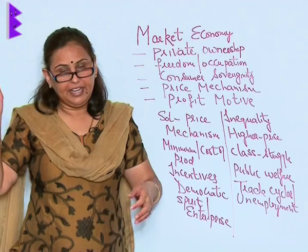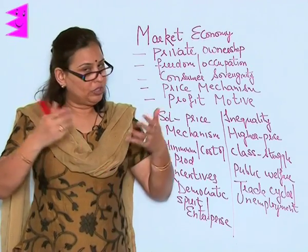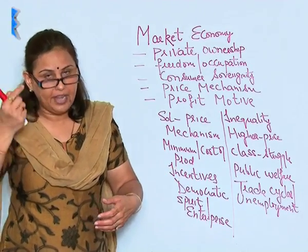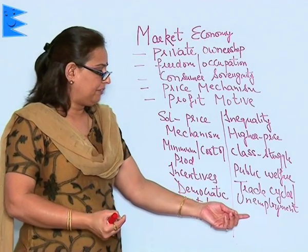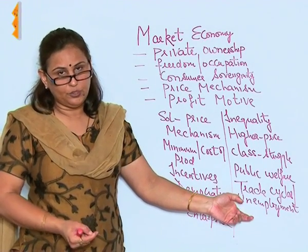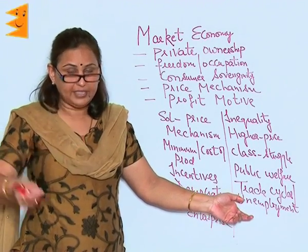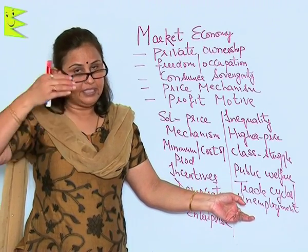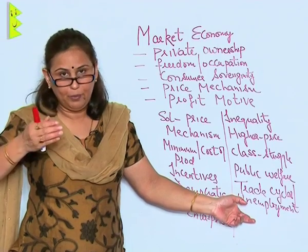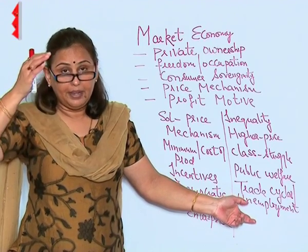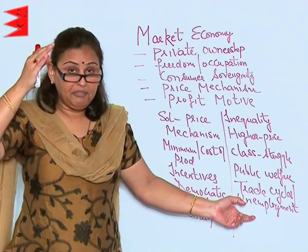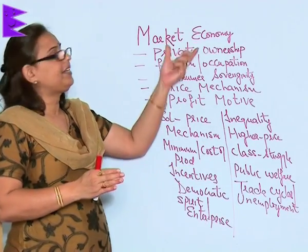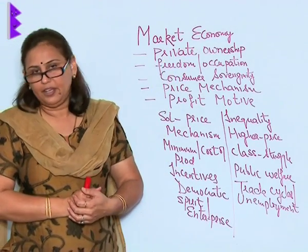Public welfare gets totally neglected because the only motive is profit. This also leads to trade cycles, and trade cycles give rise to unemployment. Unemployment is the worst kind of demerit seen in capitalist economies.